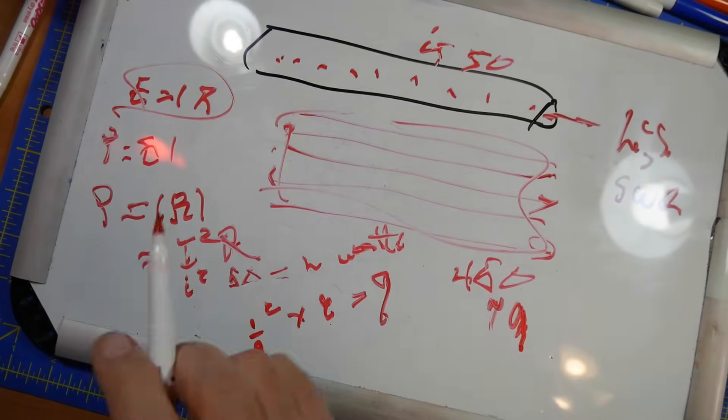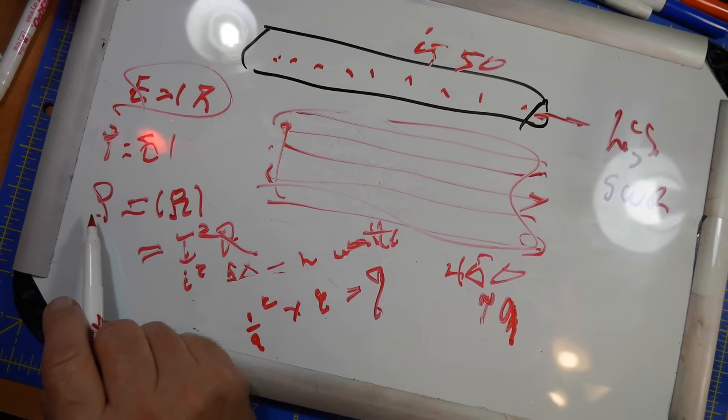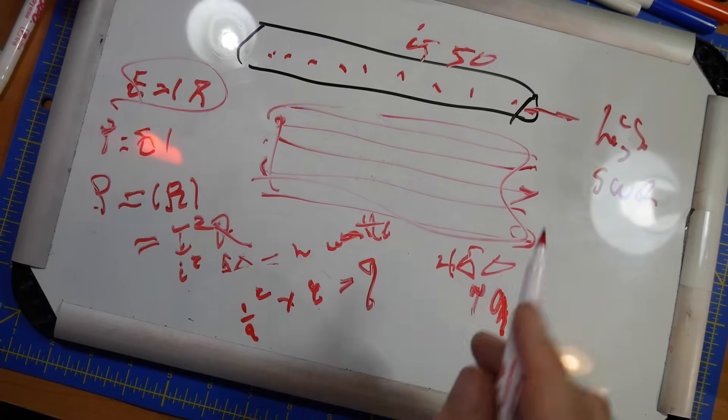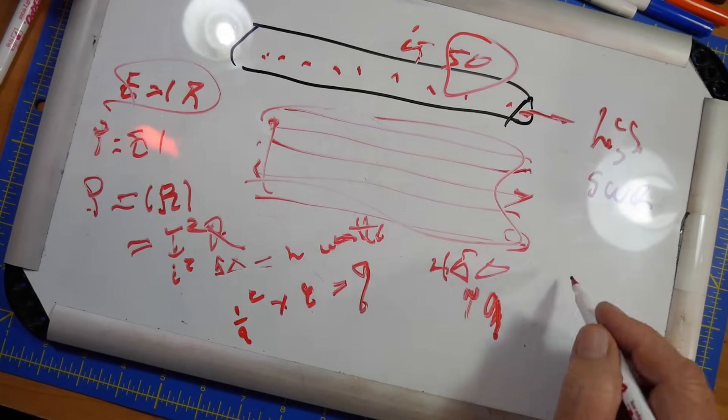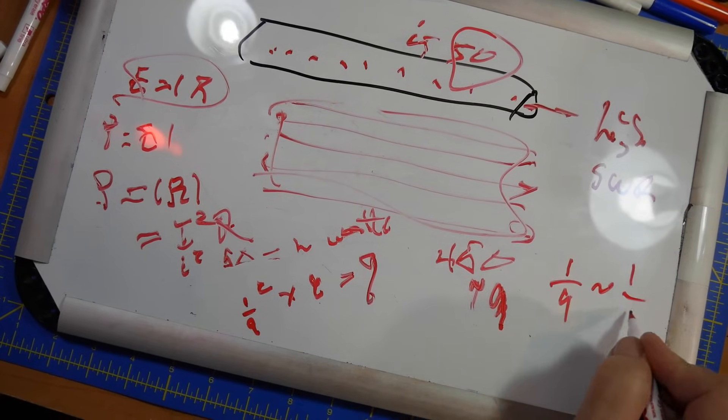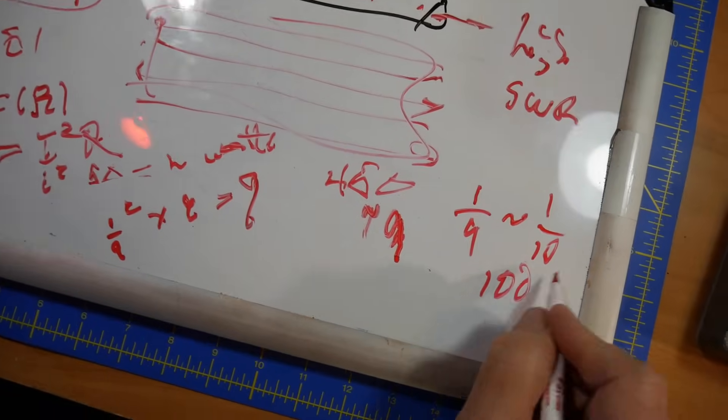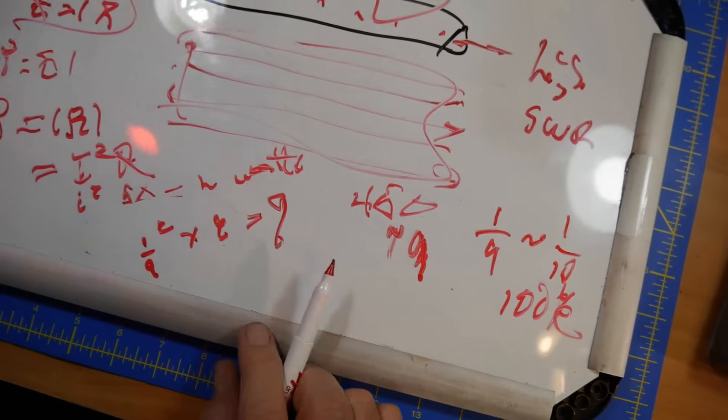Okay. So if you have a factor of 9 less current, and it's this that does it here, the power that's actually radiated is a 9th of what's radiated at 50 ohms, 1 9th. That's approximately equal to 1 10th, which is 10 dB less loss. Okay? 10 dB less loss. So there you have it, two things that we learned.